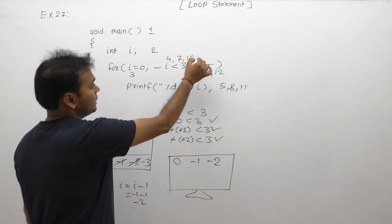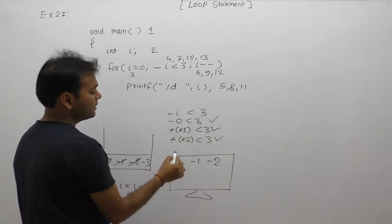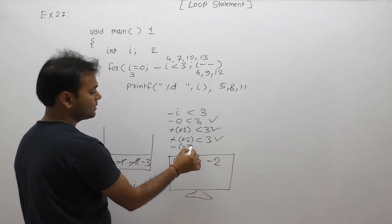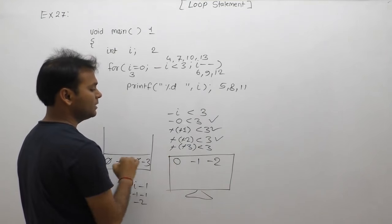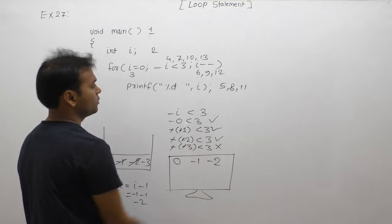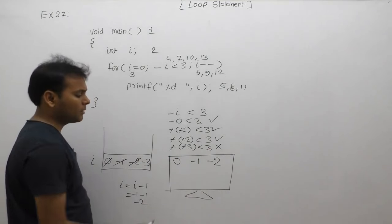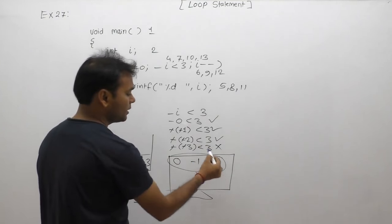Again condition testing, 13th case. Condition testing, minus minus 3 less than 3. Minus minus is plus, so 3 less than 3, condition becomes false. Control exits the loop. Output is 0, -1, -2. Thank you.